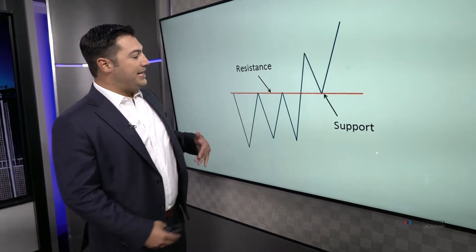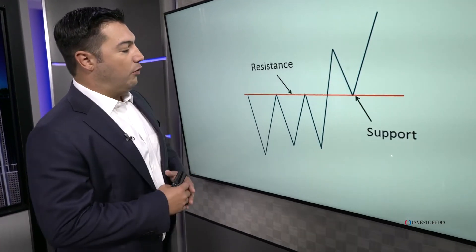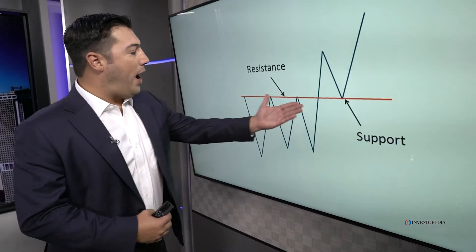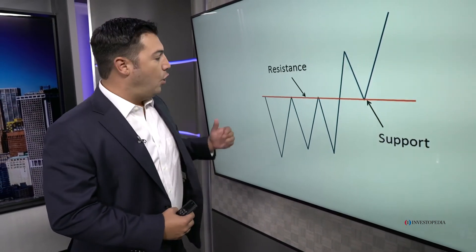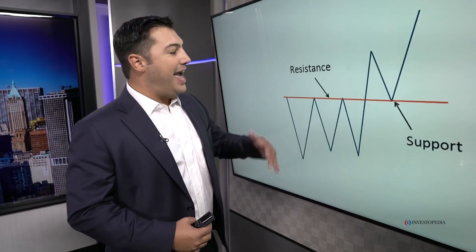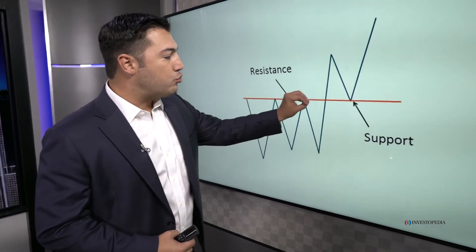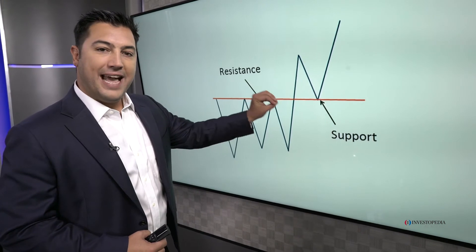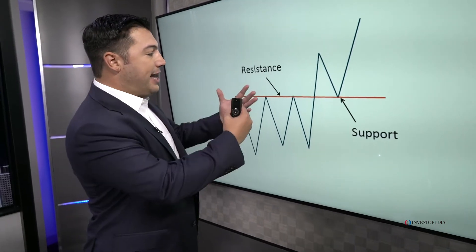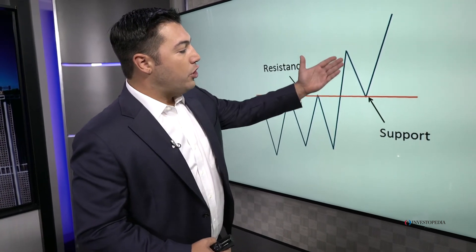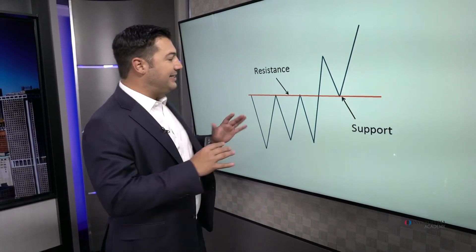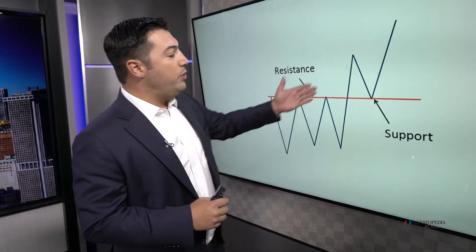By prices getting above that overhead supply, the market is suggesting to us that where there were more sellers than buyers — where there was resistance — this has now changed, and now the buyers control the market at that specific price. That's what the market is telling us after we get that breakout. When we return to that level — we talked about kickbacks when it came to trend lines — this is the exact same thing.